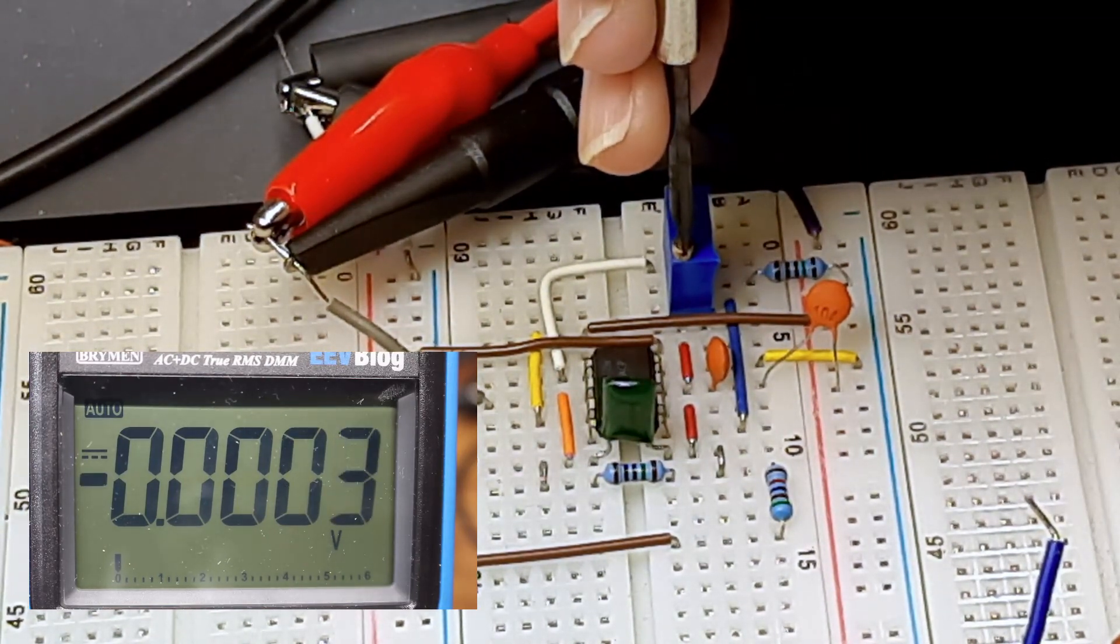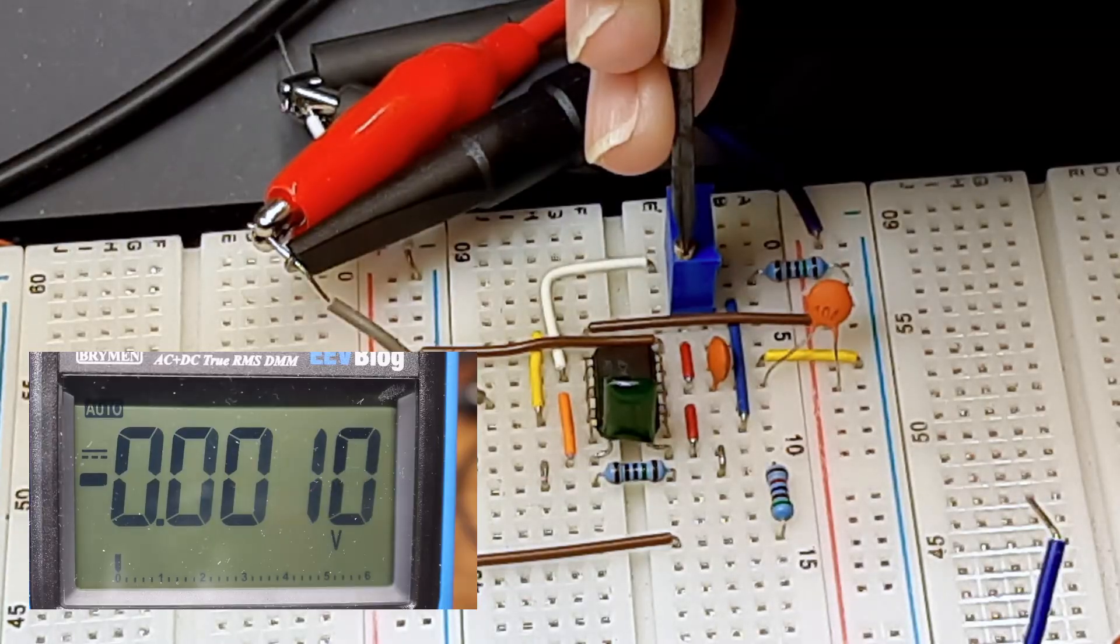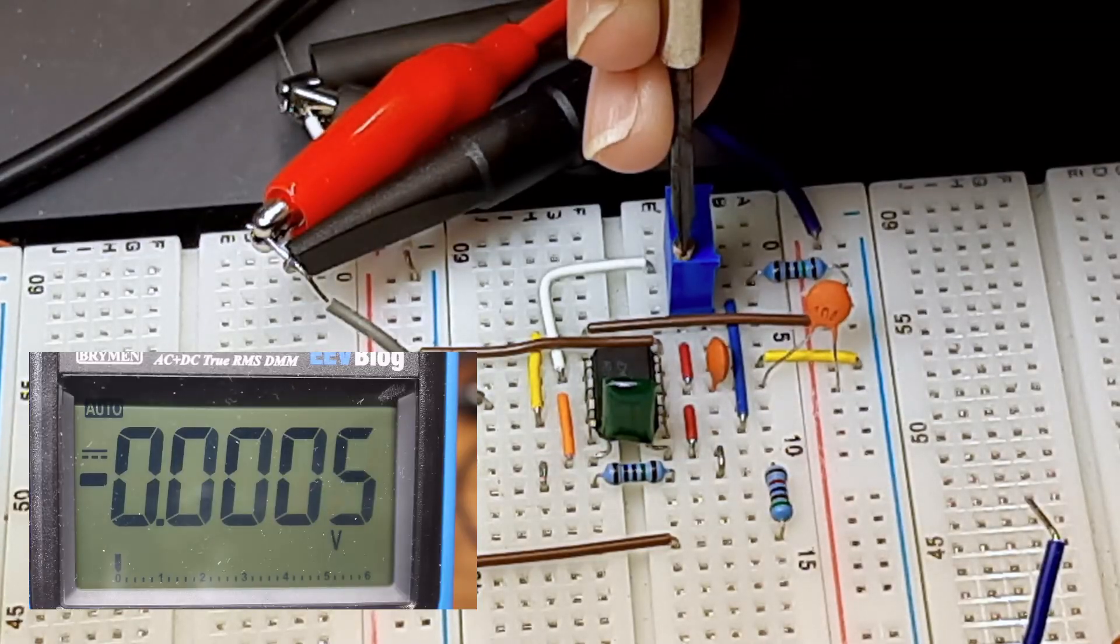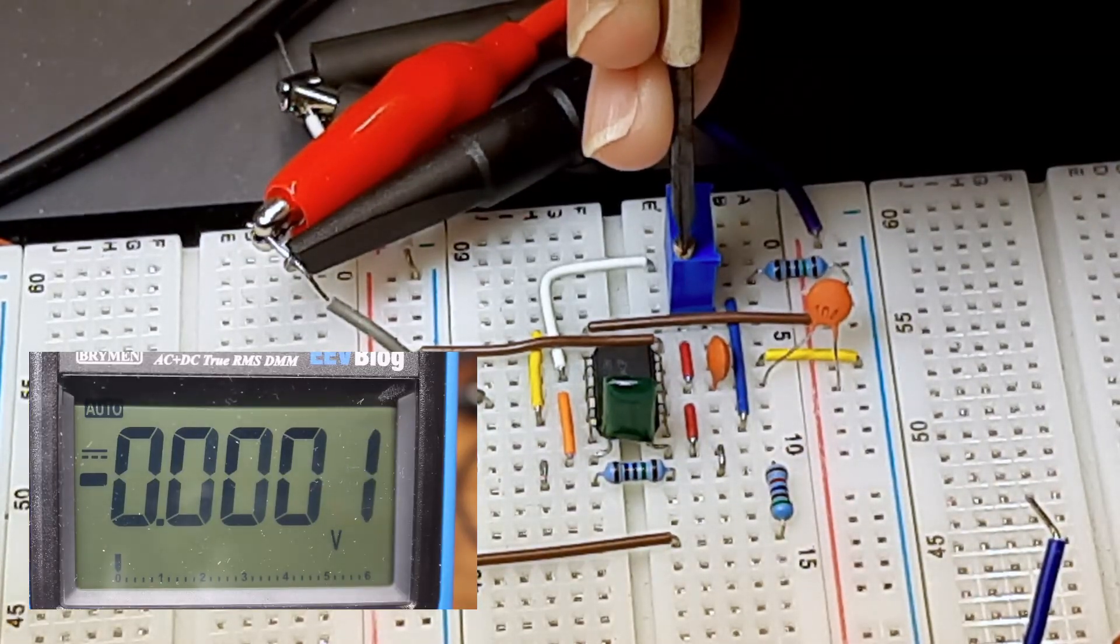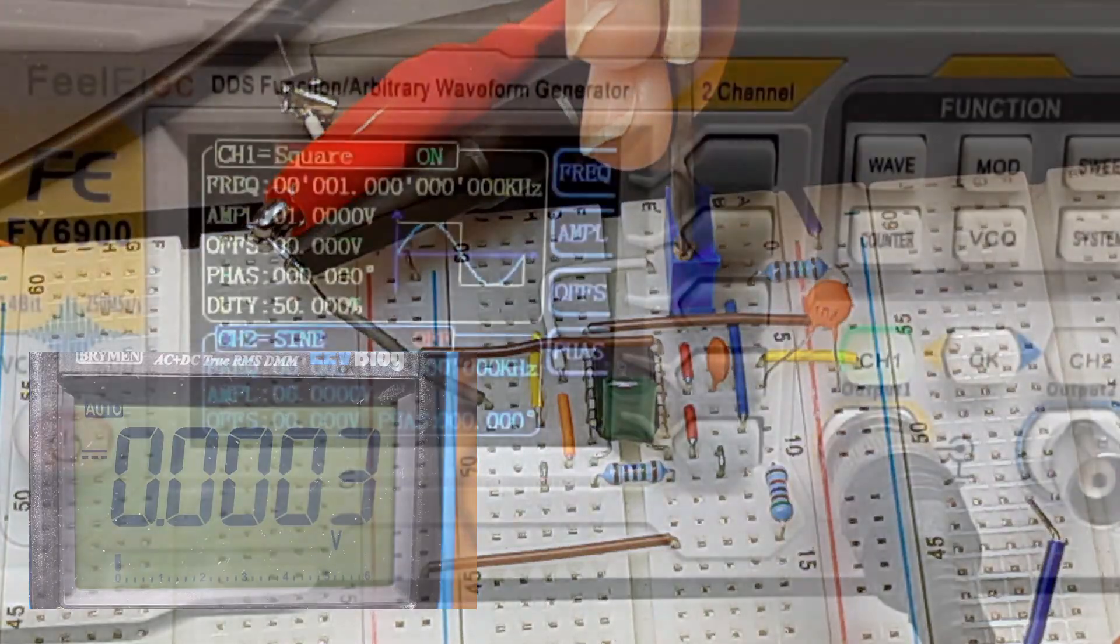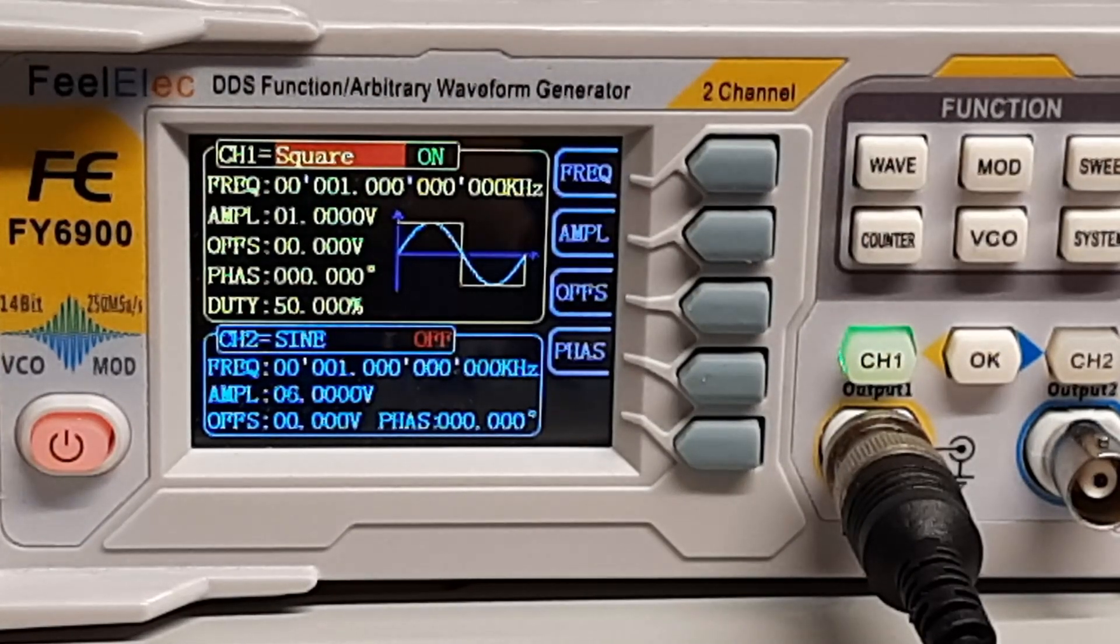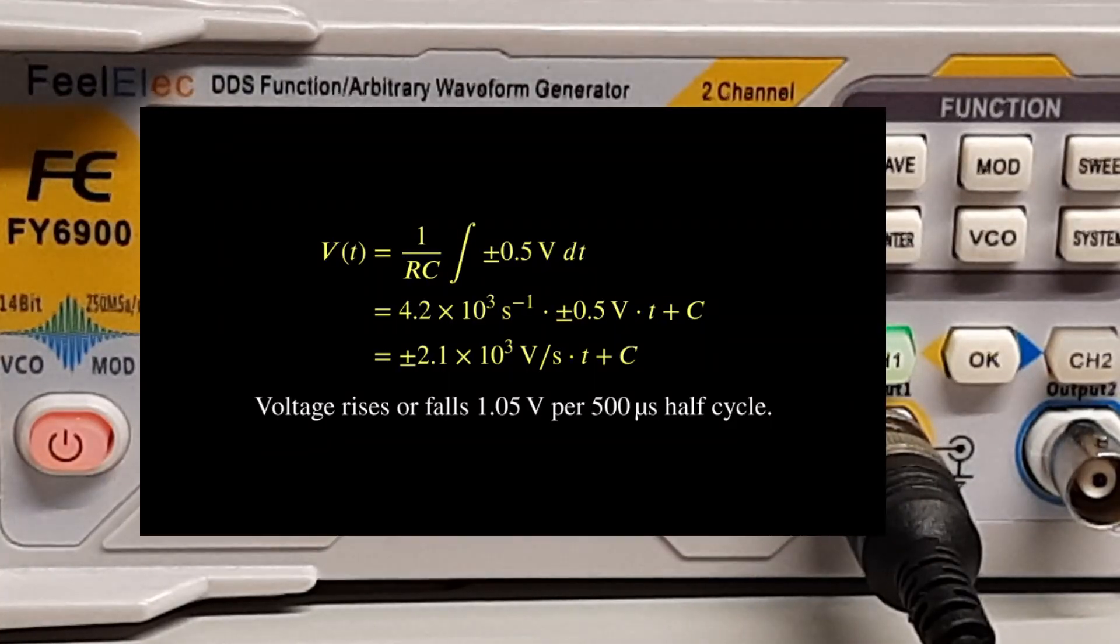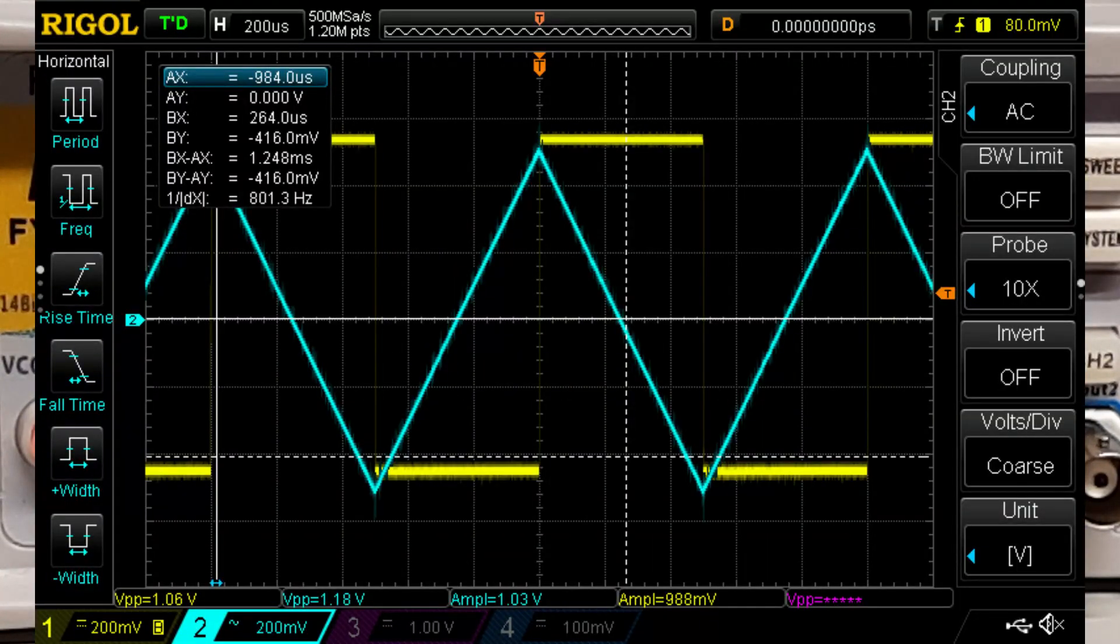Now let's put a function generator on the input, and put this thing through its paces, to show you that this circuit knows its calculus. I'll put the calculations on the screen, but not go through them in detail. The point is that the circuit can do them for me. Let's start with a 1 volt square wave. The math tells me to expect the output to be a triangle wave a little over a volt peak to peak. And that's what I see on the scope.